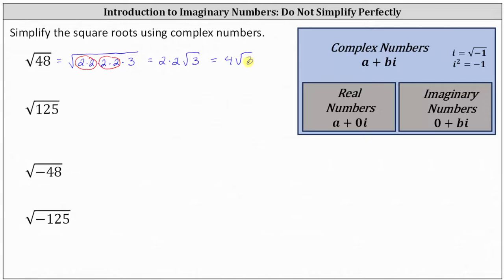This is a longer way to simplify the square root, but it always works. It would have been faster to recognize 16 is a perfect square factor of 48 and write the square root of 48 as the square root of 16 times 3. Because the square root of 16 is equal to 4, we have 4 square root of 3 much faster. But the first method will never fail.